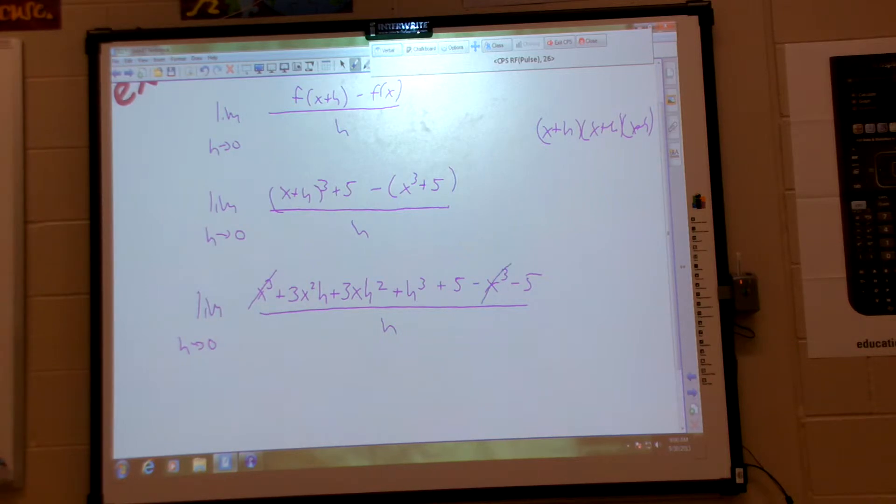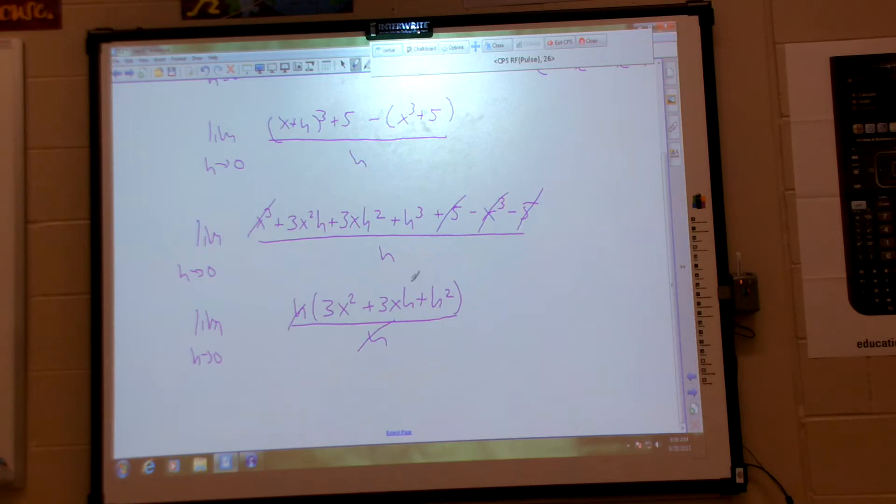Cancel those X cubes. Cancel those fives. Now what? Factor out H. 3X squared plus 3XH plus H squared all over H. Cancel. Now take the limit. H is going to zero, so are these. I'm left with 3X squared.